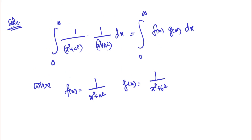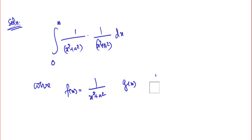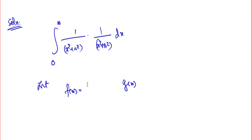However, if I directly take this as f(x) and g(x) I will have problems. So instead I am going to take different f(x) and g(x) and get this integral as an output. I will start with f(x) = e^(−ax) and g(x) = e^(−bx), assuming both a and b are greater than zero. The reason is that the Fourier cosine transform of e^(−ax) involves a/(s² + a²), which is similar to what we need.